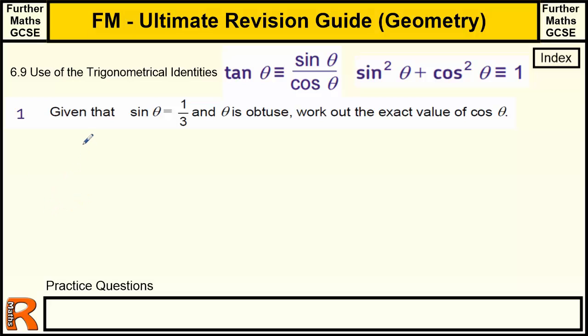Let's look at question one. Given that sine theta is one third and theta is obtuse, work out the exact value of cos theta. To solve this, we're going to use this identity here. We're told what sine theta is, so we can work out sine squared theta. That will allow us to work out what cos squared theta is, and then we can just square root to find cos. And we're told theta is obtuse, so I'll come back to what the obtuse bit is to do with in a minute.